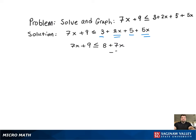just like in a regular linear equation, we need to get the variables to one side and constants to the other, which is why we subtract 7x.